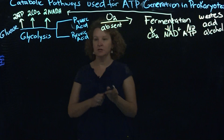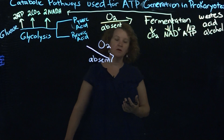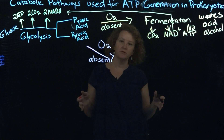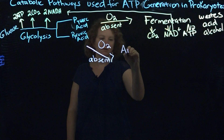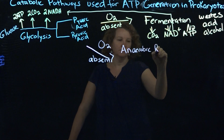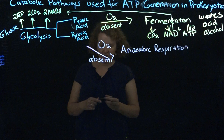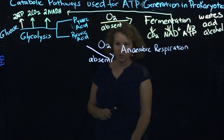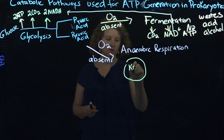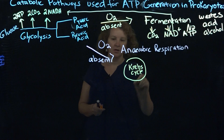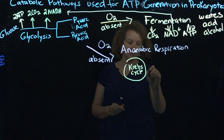Another option if oxygen is absent is anaerobic respiration. You might only think of respiration as happening with oxygen and an electron transport chain, but there is a very similar form of that which is an anaerobic pathway. This does involve the Krebs cycle, though my understanding is that you need oxygen to complete the full round of Krebs. From there you can go into the anaerobic electron transport chain.